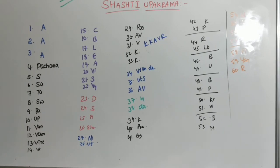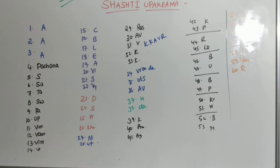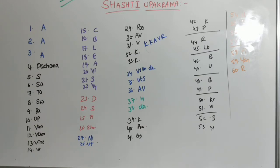The eighth one is Svedhana. The ninth one is Parisheka — sprinkling of water. The tenth one is Upanaha. The eleventh one is Vimlapana. By this, Svedhana is completed. After these pre-operative Purvakarma procedures, you will come to know Vamana and Virachana. These are the main Panchakarma procedures. By this, we have completed our two sets — fourteen names remembered by you in an easy way.